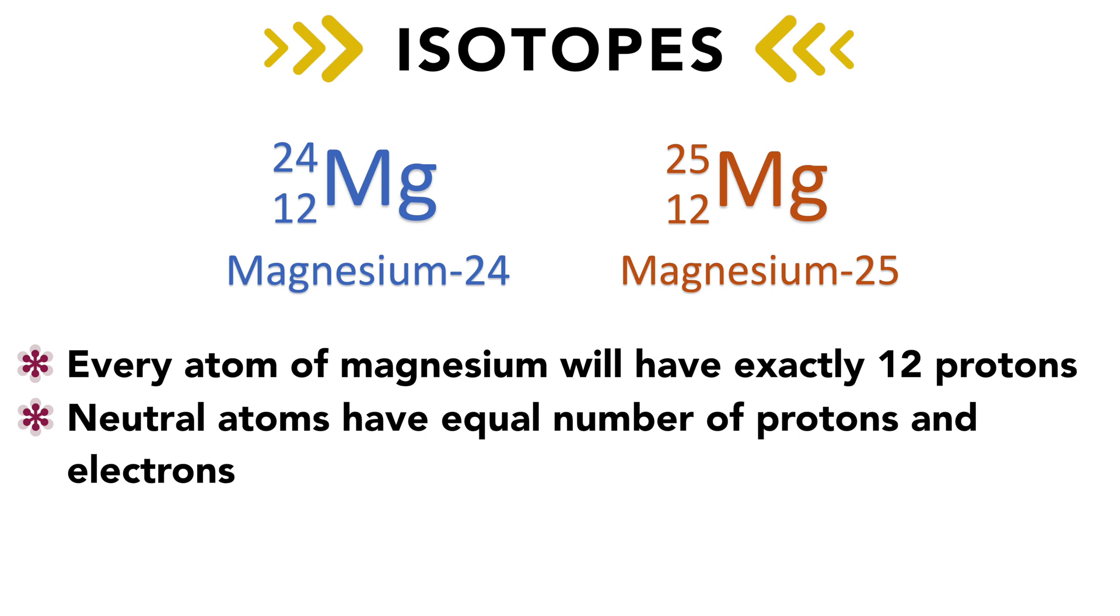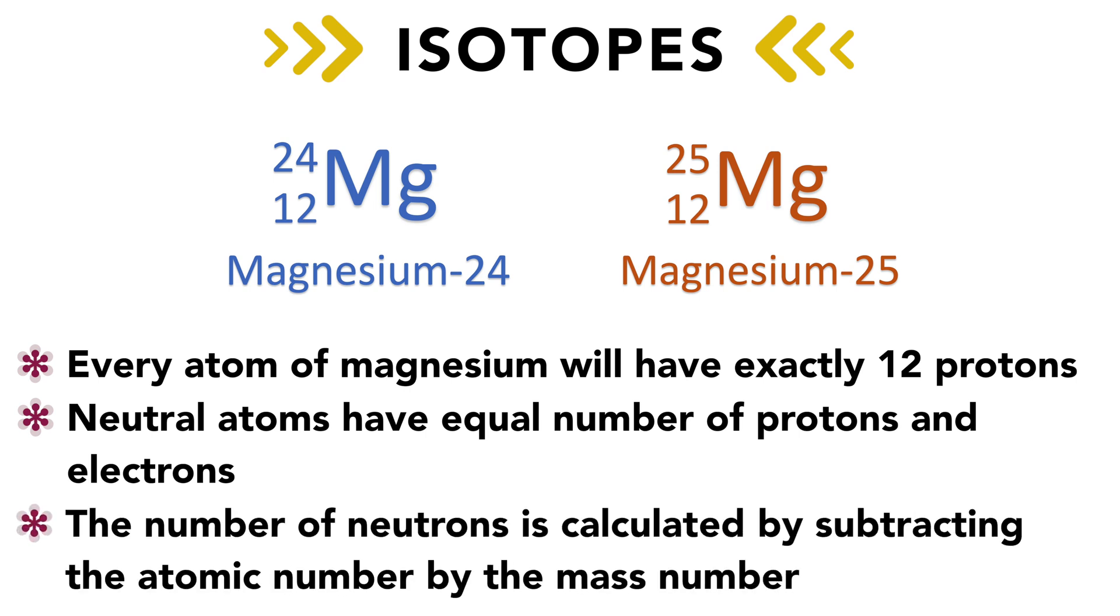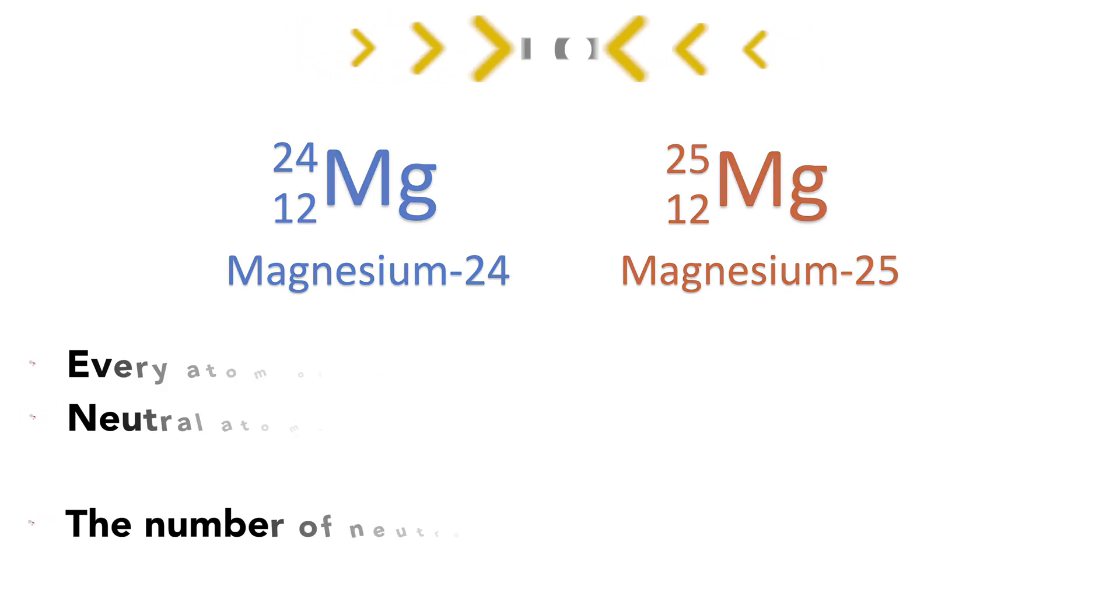In a neutral atom, the number of protons and electrons are equal so that there will always be 12 electrons. Finally, we can determine the number of neutrons by finding the difference between the number of protons and the mass number. So magnesium 24 would have 12 neutrons, while magnesium 25 would have 13 neutrons.